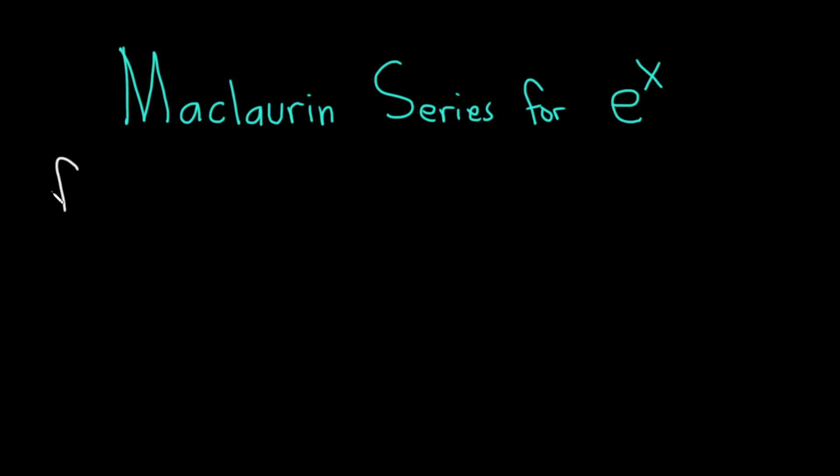So we're going to set f of x equal to e to the x, and the Maclaurin series for e to the x is basically this function equal to the infinite sum as n runs from 0 to infinity of the nth derivative of f evaluated at 0 over n factorial times x to the n.